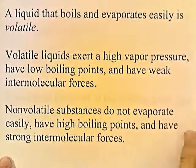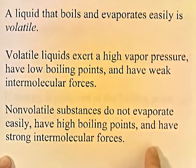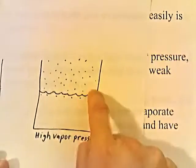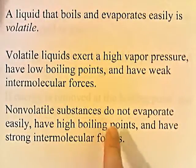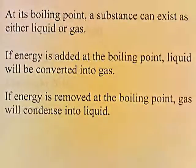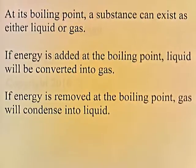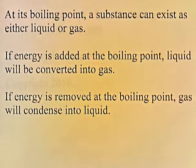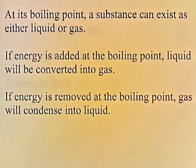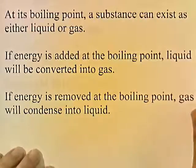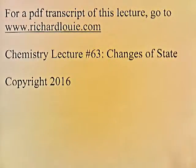Quick review: a liquid that boils and evaporates easily is volatile; a non-volatile substance does not evaporate easily. At its boiling point, a substance can exist as either a liquid or a gas — if energy is added, a liquid is converted into gas; if energy is removed, gas will condense into a liquid. That's a lot of information about changes of state. This has been Chemistry Lecture 63, Changes of State.